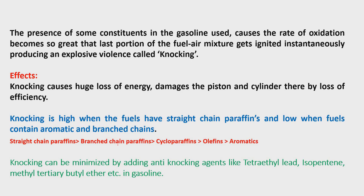Earlier, tetraethyl lead was added to reduce knocking. However, tetraethyl lead also undergoes combustion, producing toxic gases like lead hydroxides. That is why the government banned its usage in petrol. When we go to any petrol station, we find ULP — unleaded petrol — which does not contain any lead compounds. Instead of tetraethyl lead, nowadays we use isopentene and methyl tertiary butyl ether, which produce only carbon dioxide and water on combustion.